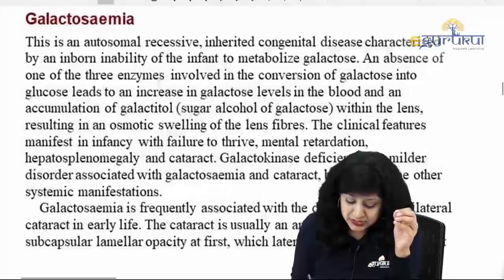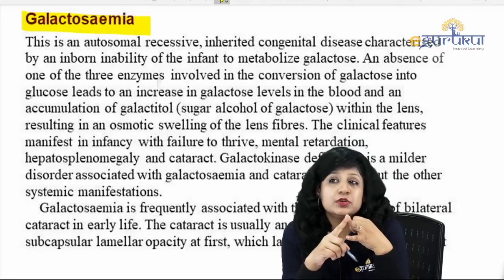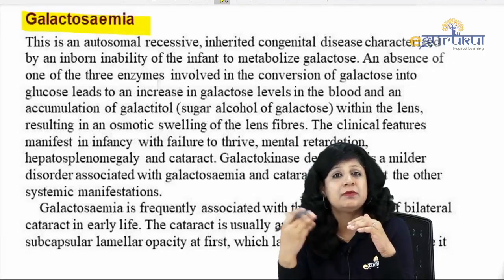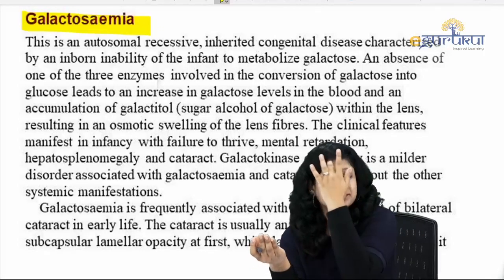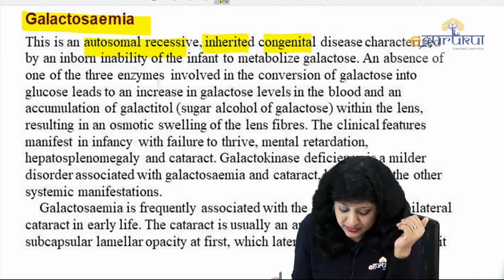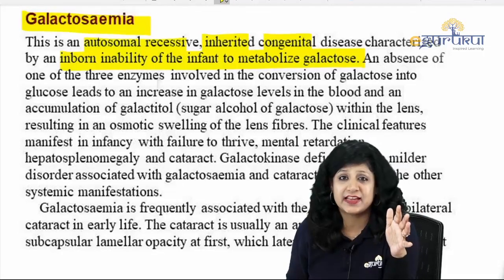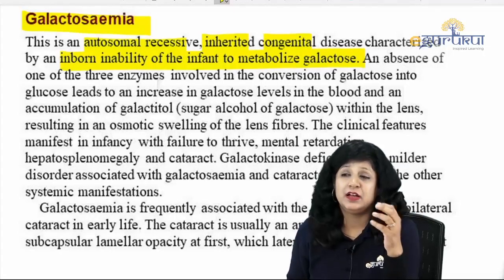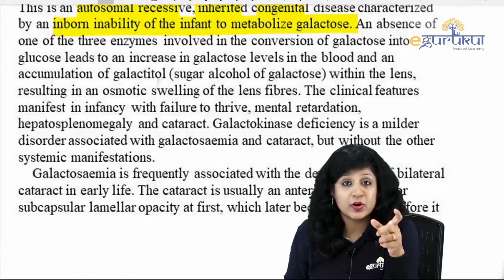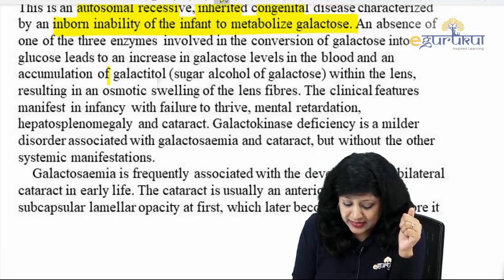Then we come to galactosemia. Galactosemia comes under systemic, metabolic, and also congenital/developmental headings because a child may be born with it. It is an autosomal recessive inherited congenital disease — an inborn error of metabolism. The child does not have the enzymes to metabolize galactose, causing hypoglycemia. Absence of one of three enzymes involved in conversion of galactose into glucose leads to accumulation of galactitol.